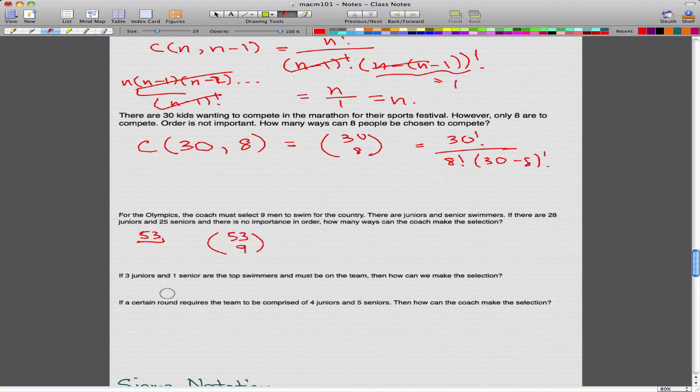Let's say if there are 3 juniors and 1 senior who are really good swimmers, and they must be on the team, then how can we make the selection? Well, 4 spots are already taken and 4 distinct objects must be taken. So we take 53 minus the 4 and we get 49, and we also have to minus the spots we have allocated. So 9 minus 4, which is equal to 5. Then the answer is simply 49 choose 5.